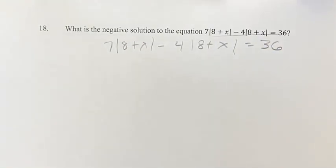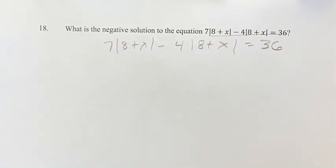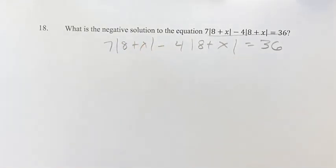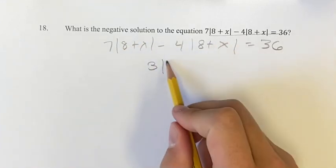And what we can do here first is we can say if we have 7 of something minus 4 of something, that's going to be 3 of that something. So we can actually treat this absolute value as a variable in itself and say that 7 of it minus 4 of it are equal to 3 of it. So we have 3 times the absolute value of 8 plus x.